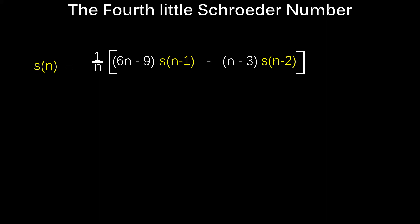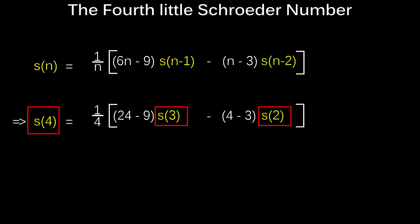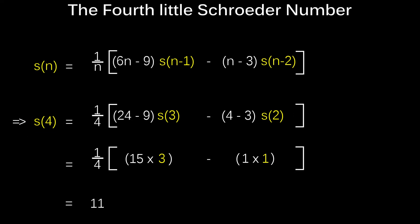We'll use an input of n equals 4 to calculate the fourth Schroeder number. It's a recurrence relation because we use the previous two Schroeder numbers to calculate the next. After a little arithmetic, it outputs the fourth Schroeder number, 11, as expected.